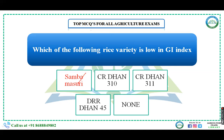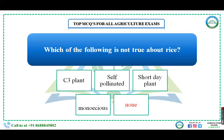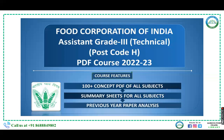Which of the following is NOT true about rice — C3 plant, self-pollinated, short-day plant, or monoecious? All four options are actually correct: rice is a C3 plant, self-pollinated, short-day plant, and monoecious. So the right answer is 'none of the above' because all options are correct.